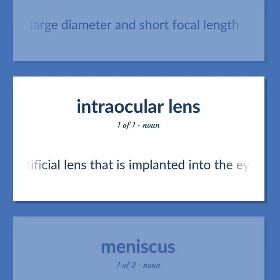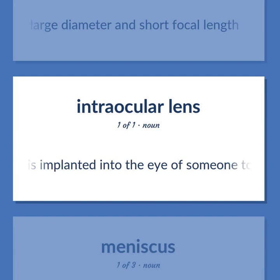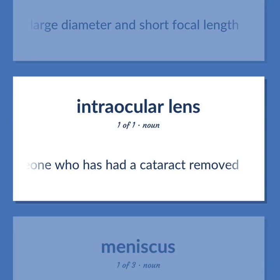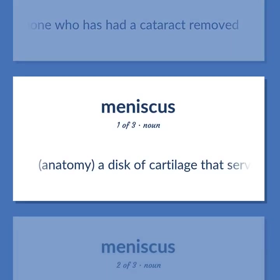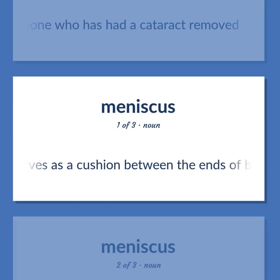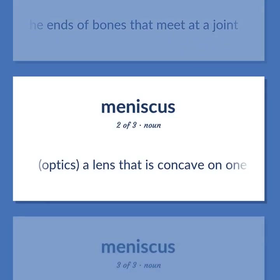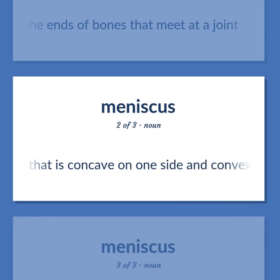Lens types: intraocular lens — an artificial lens implanted into the eye to replace a damaged natural lens or for someone who has had a cataract removed. Also: meniscus — a disc of cartilage that serves as a cushion between the ends of bones that meet at a joint. Also: a lens that is concave on one side and convex on the other.